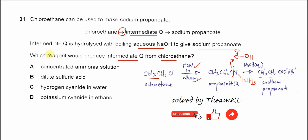So the question is quite simple — which reagent would produce intermediate Q? We just need to use this one. The answer therefore must be D: potassium cyanide in ethanol.